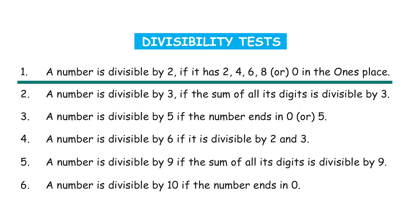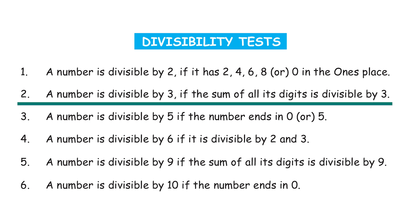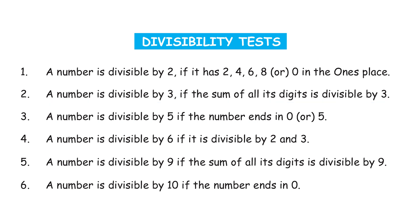Let's look at the divisibility tests you have learned so far. The first one: a number is divisible by 2 if it has 2, 4, 6, 8, or 0 in the ones place. For the test for 3, a number is divisible by 3 if the sum of all its digits is divisible by 3. For 5, you just look at the last digit — if the number ends in 0 or 5.